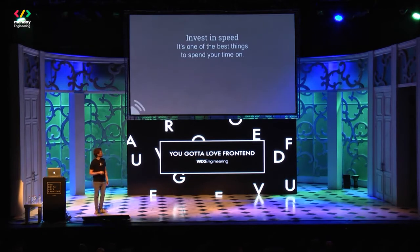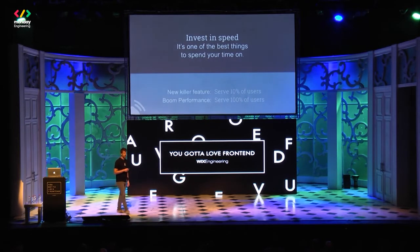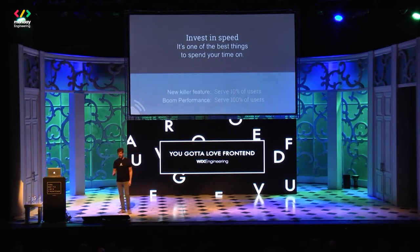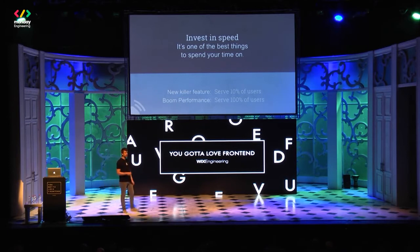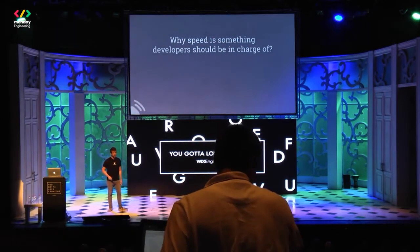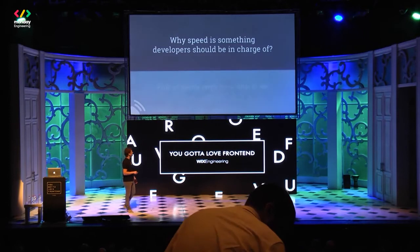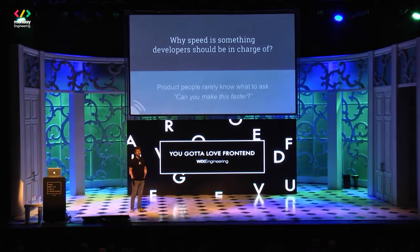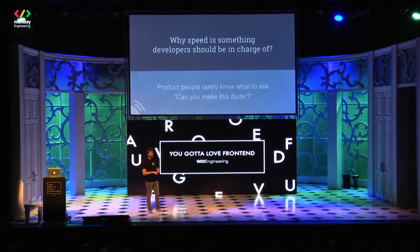The main point here is: invest in speed. It's one of the best things you can spend your time on. When you create a niche feature it might serve 10% of users, but if you improve the performance of the product it's going to serve everyone. Speed is something you should be in charge of, because the product guy will ask 'can you make this faster?' but they don't know how to do it. You know what's happening on the client and on the server, and you can improve the performance of the product.